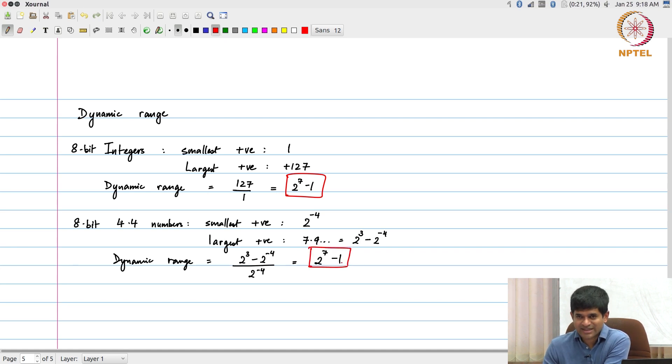This is sort of just once again stating what should have been obvious to you from the beginning. The dynamic range that we get for 8-bit 4 dot 4 numbers does not really depend on where the decimal point is placed, whether it is 4 dot 4 or the 8-bit integer could be considered as a special case, an 8 dot 0 format - 8 bits of integer, 0 bits of fraction. An 8 dot 0 format, 4 dot 4 format, 2 dot 6, 1 dot 7, all of them represent a different range of numbers.